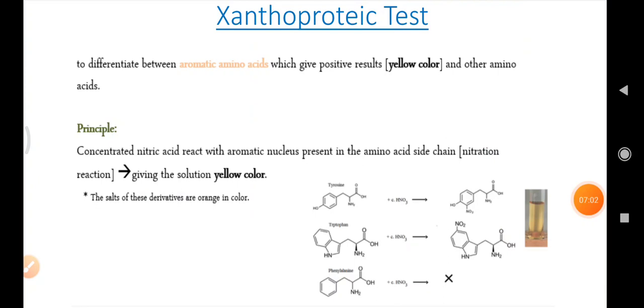This is the change in color which we can observe during performance of the practical. Now coming to the third test that is the xanthoprotic test. Xanthoprotic test is used to differentiate between aromatic amino acids which give positive results.